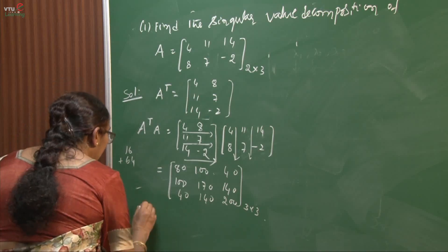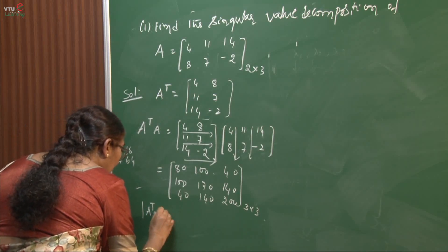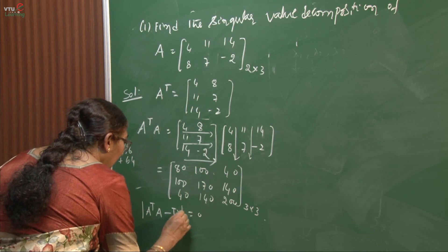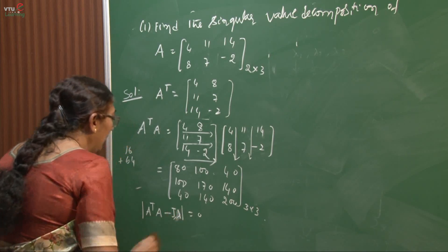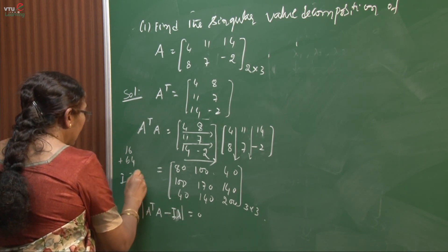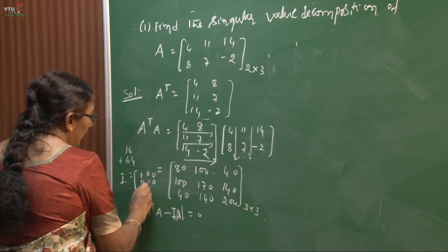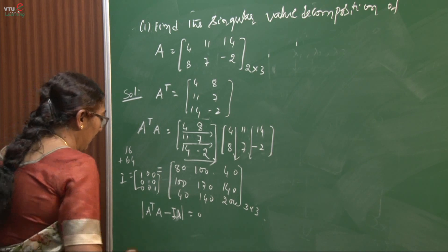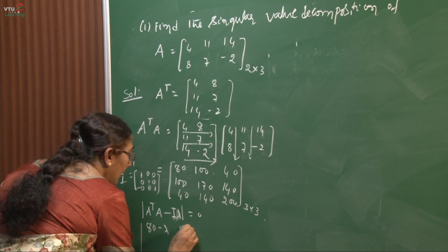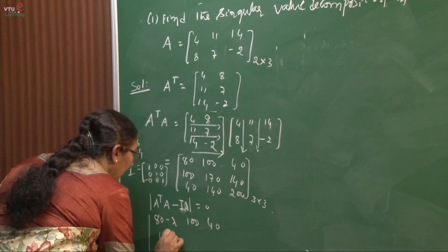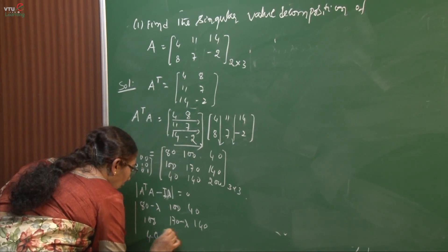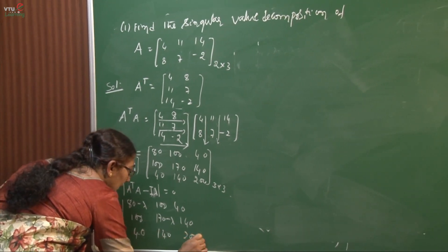Next, we take the determinant of A transpose times A minus lambda I equal to 0. Since A^T A is 3 cross 3, I is the 3 cross 3 identity matrix. The resulting matrix is [80-lambda, 100, 40; 100, 170-lambda, 140; 40, 140, 200-lambda], and we set its determinant equal to 0.